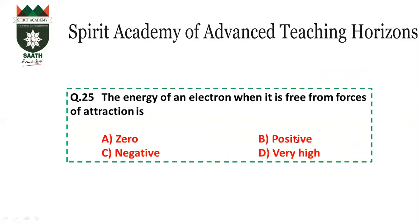Question number 25: Energy of an electron when it is free from attraction. When there is no attraction, the energy is zero. The answer is A (zero energy).